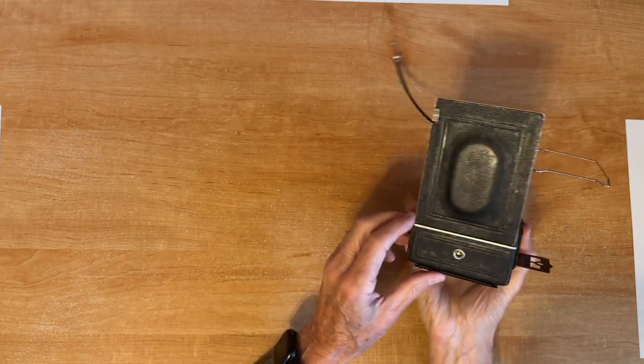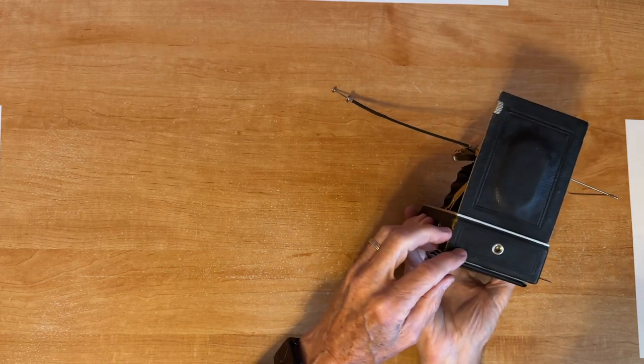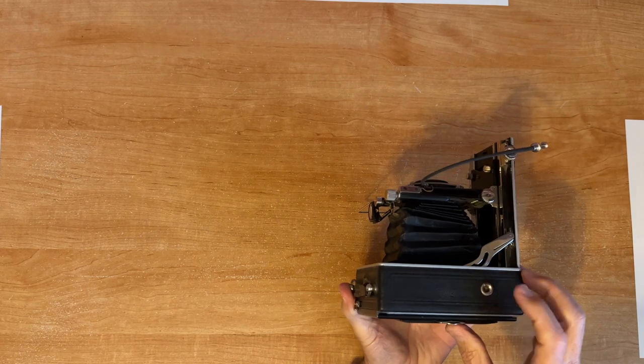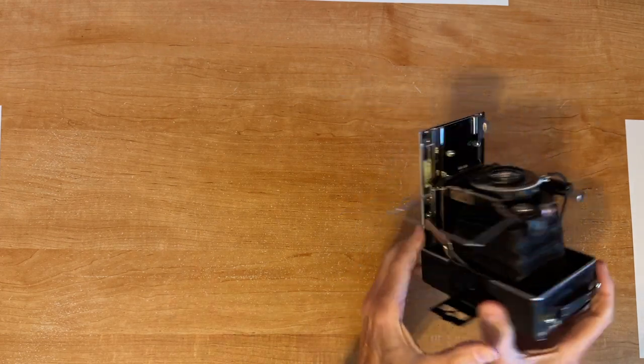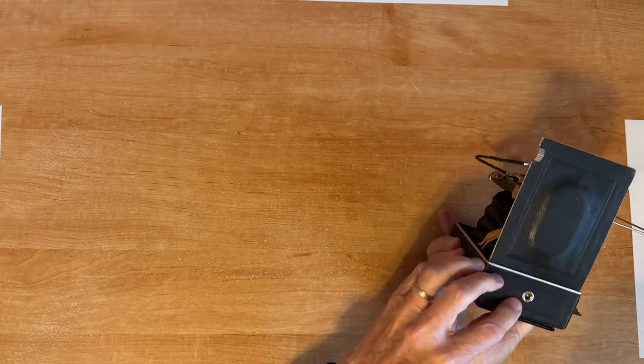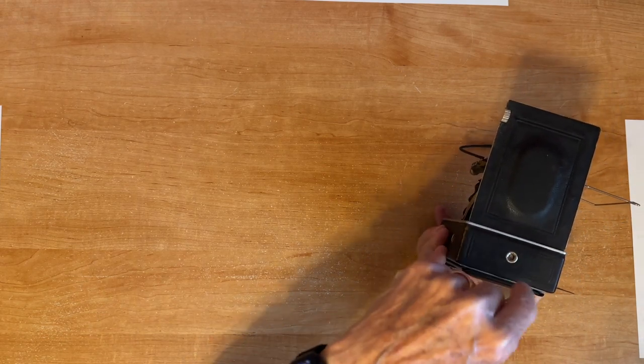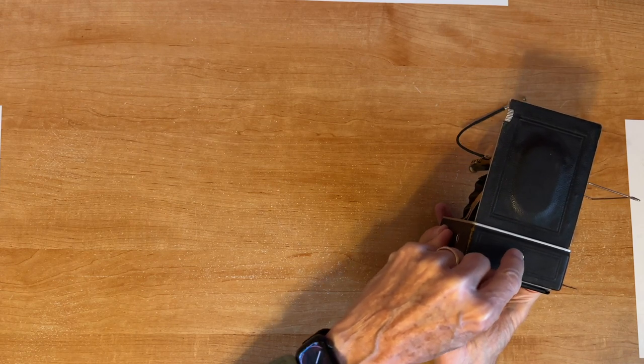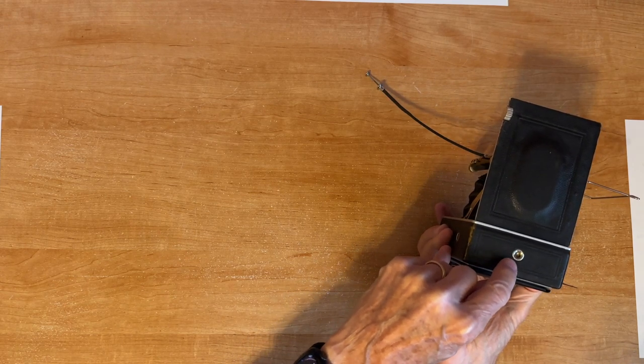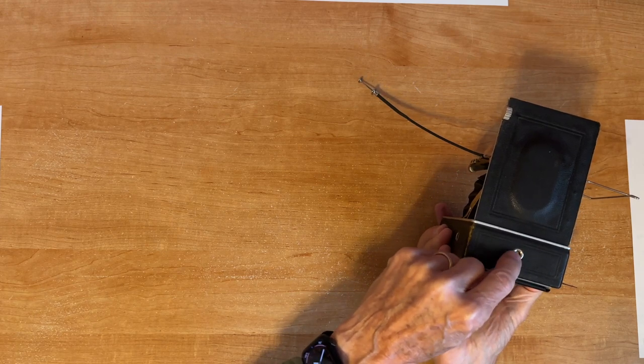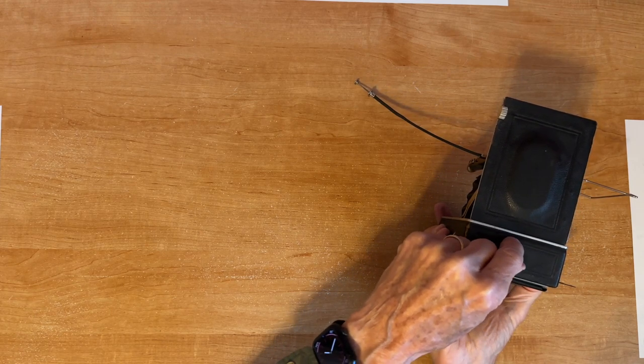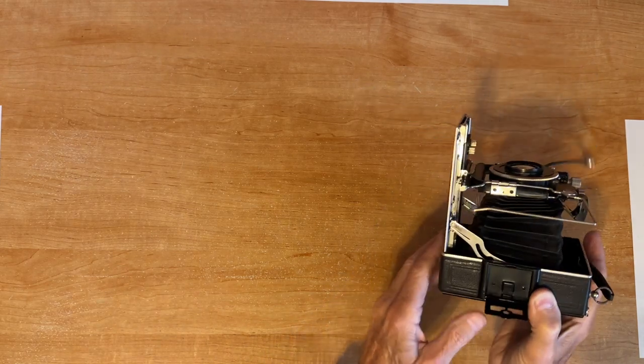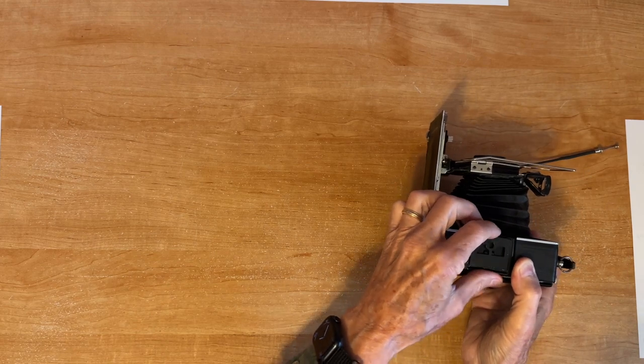On the bottom of the camera, we have a quarter by 20 tripod socket. We also have one on this side of the camera. And I have to warn you, these tripod sockets are the shallowest tripod sockets I've ever seen. So the normal threaded insert that I have on my release plates for my Manfrotto quick release plates, the threads are too long for this and it'll jam up before it gets tight. So I had to put a washer on there so that it didn't get too tight.